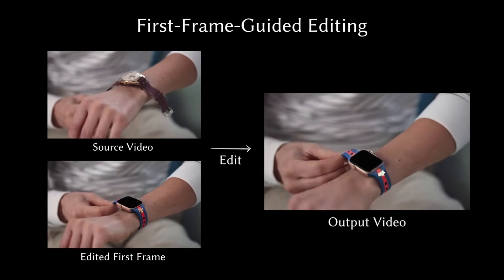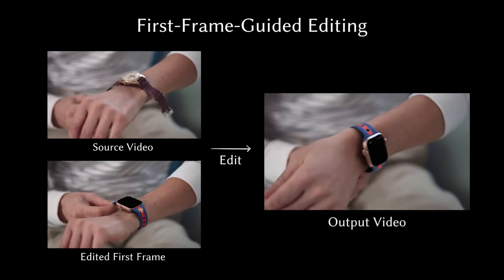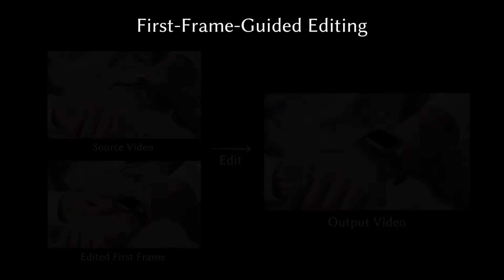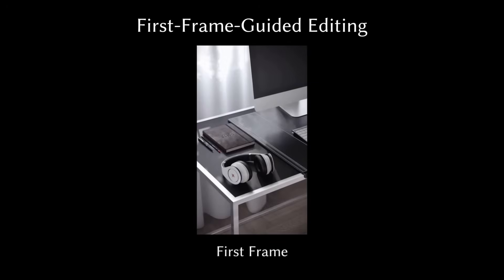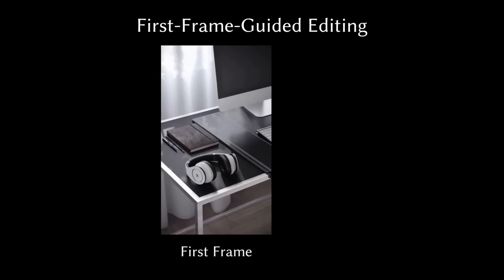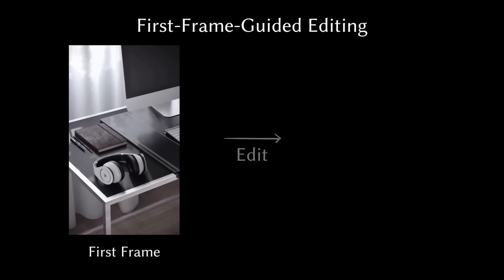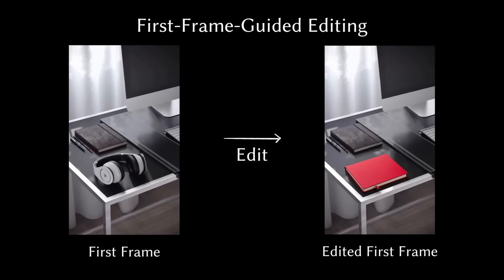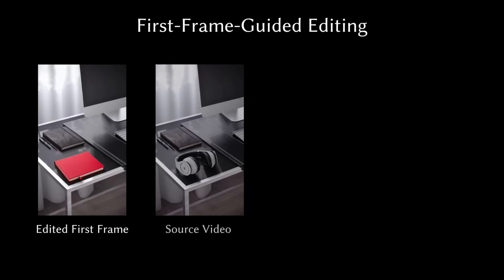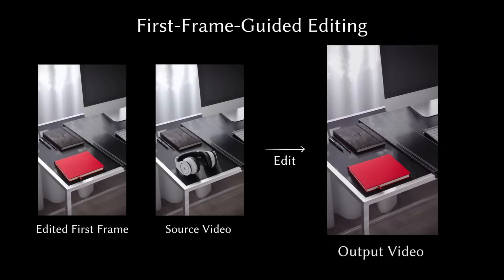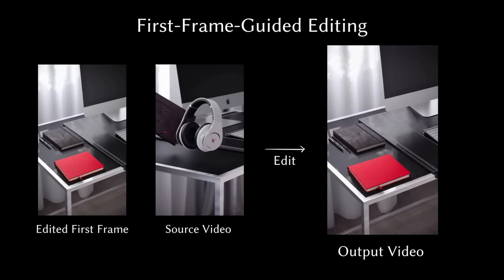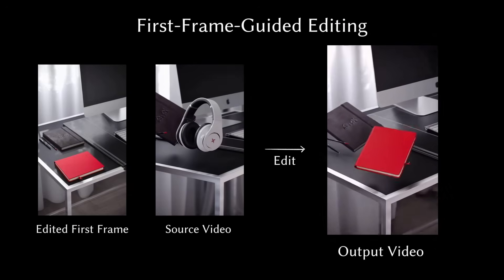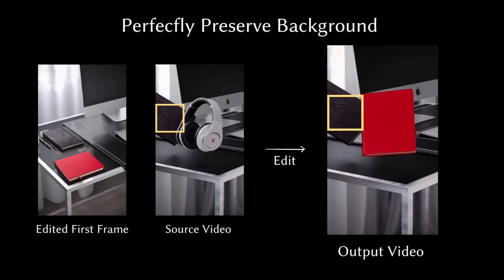The new watch tracks the motion perfectly. It's wild. Here's another one — headphones on a desk. They edit the first frame and turn them into a red notebook. And just like that, the AI does the rest. This is perfect for swapping products in ads without reshooting.